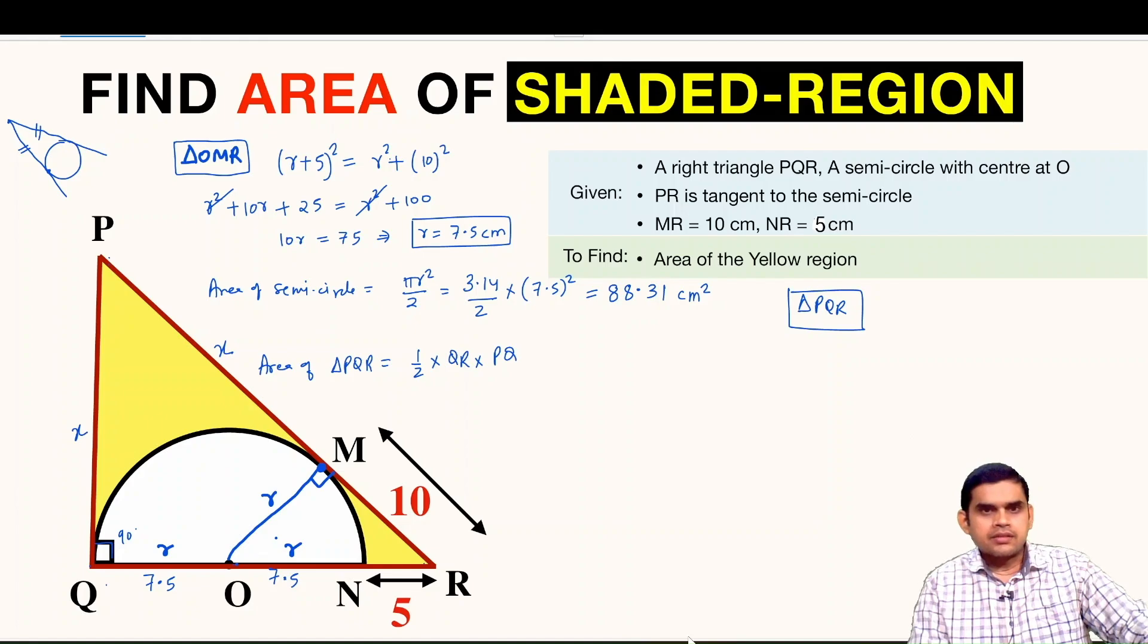Now we can apply Pythagoras theorem in this triangle PQR. So hypotenuse will be PR, that means (x + 10) square is equal to x square plus, this is 7.5 plus 7.5 is 15, 15 plus 5 is 20, so you can write square of 20.